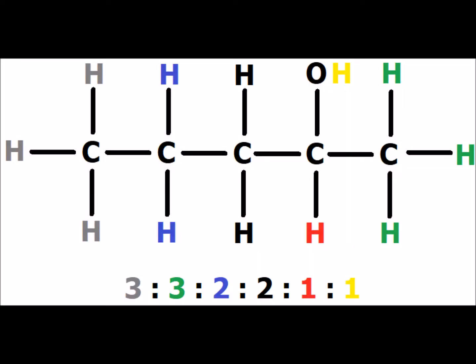2-pentanol also has six distinct hydrogen signals. A helpful way to distinguish it from 1-pentanol is to look at the single red hydrogen attached to the alpha carbon — the same carbon that has the hydroxyl group — shifted downfield because of the deshielding effect of the very electronegative oxygen. The ratios of equivalent hydrogen signals are 3 to 3 to 2 to 2 to 1 to 1, with equivalent hydrogens shown in the same color.